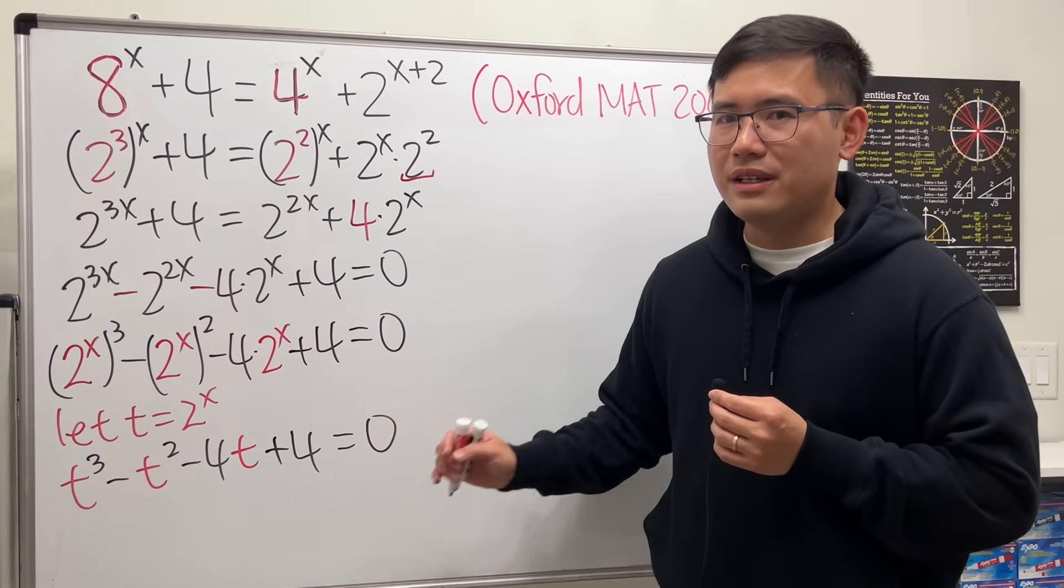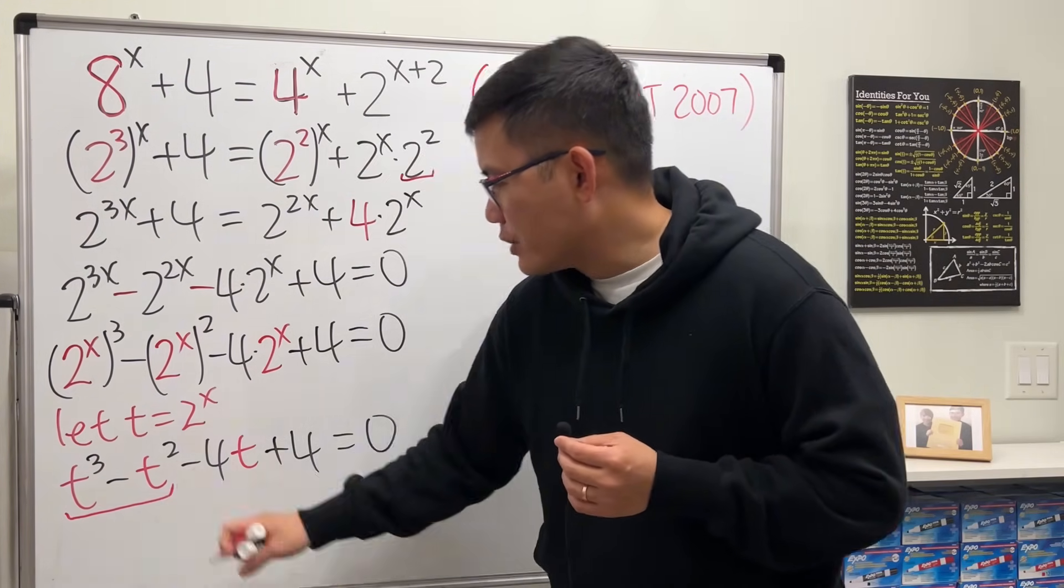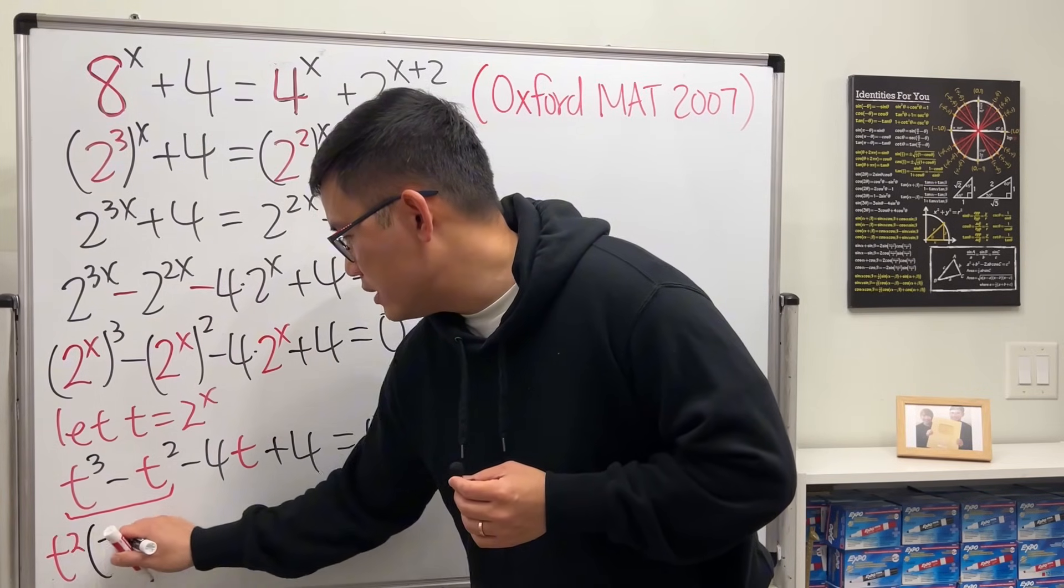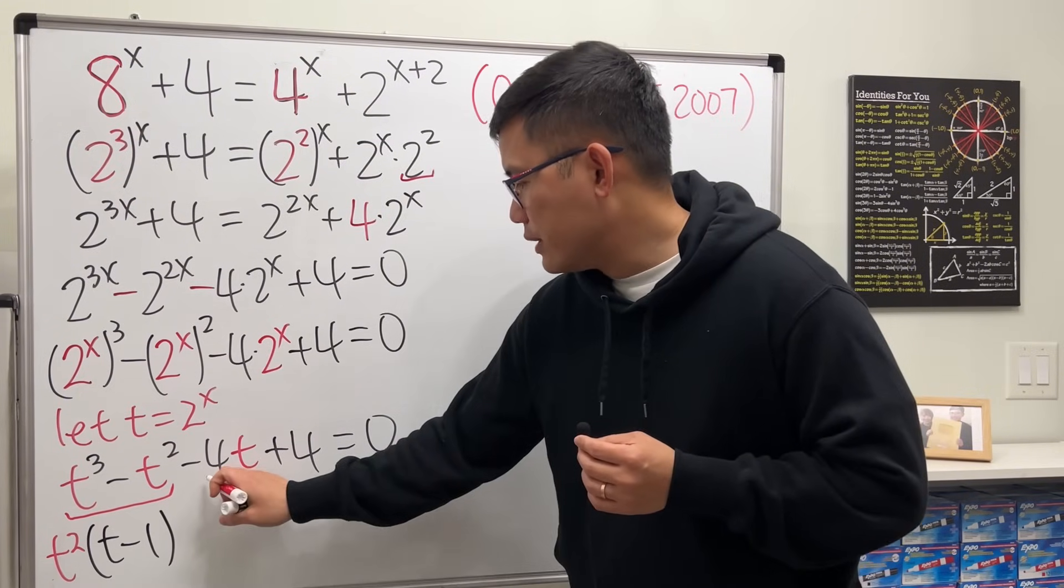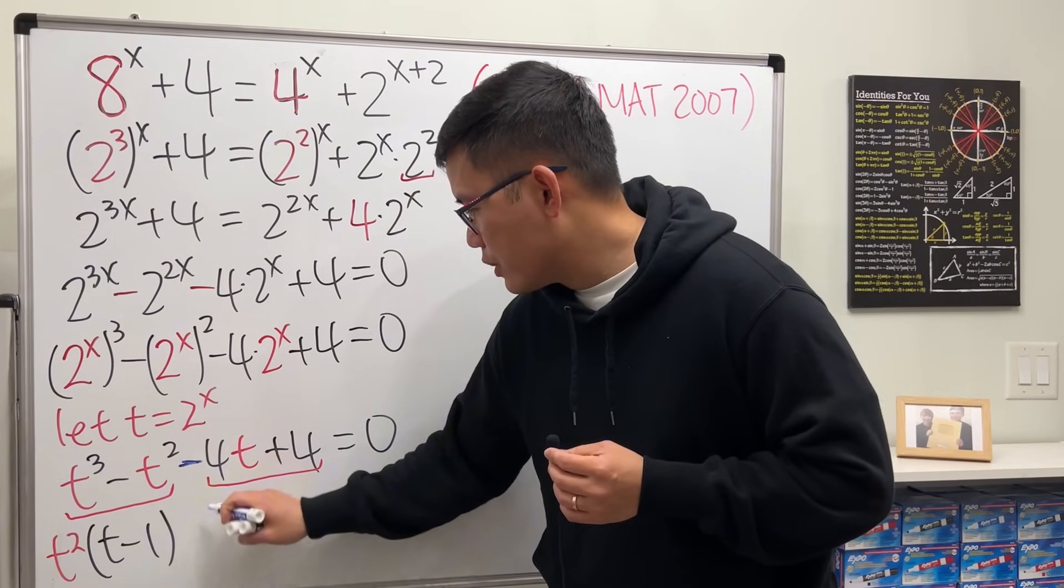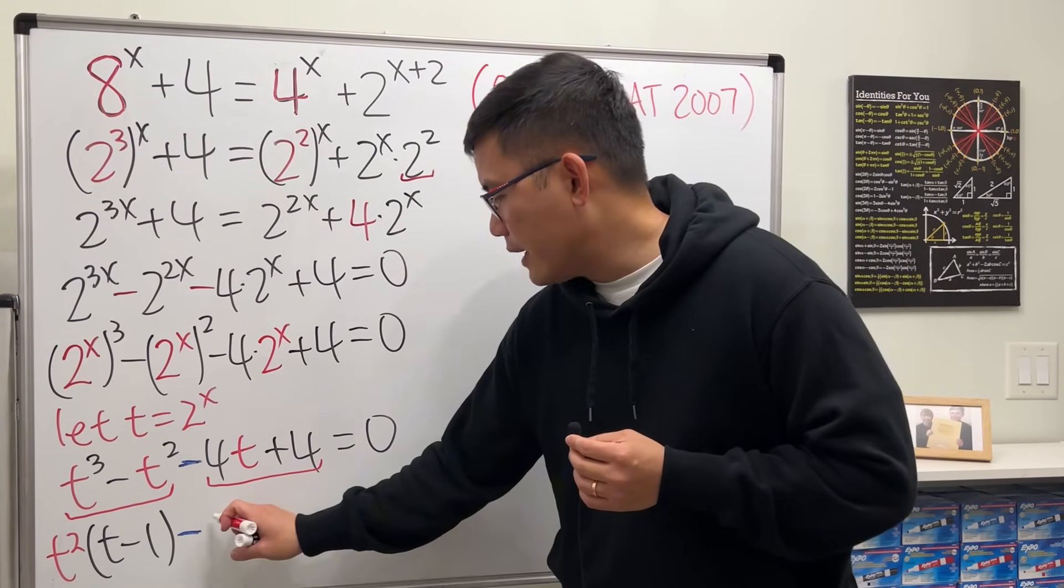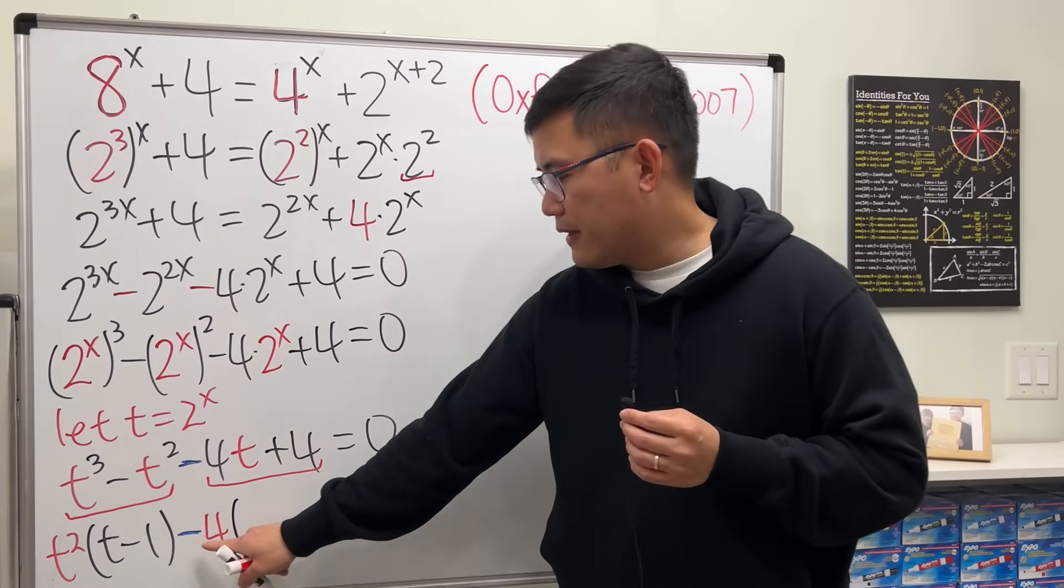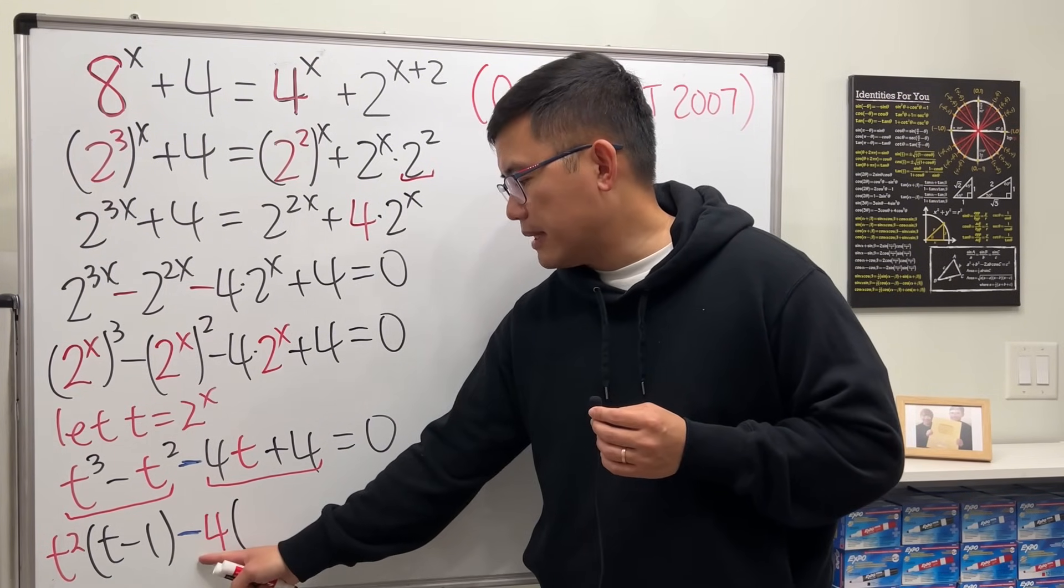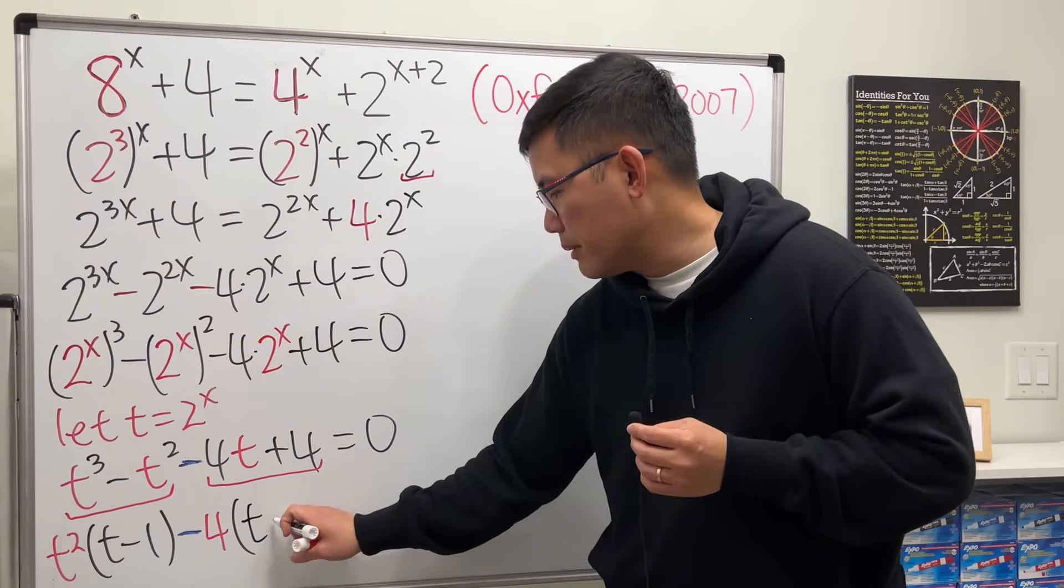We have a cubic equation now. And this right here is factorable by grouping. So let's look at the first two terms. We can factor out t squared, and then we get t minus 1. And then for these two terms, notice we have a minus in between here. Go ahead and write that down right away. 4 and 4, we factor out 4. But we are really factoring out negative 4. So originally, this term divided by negative 4, we get positive t. 4 divided by negative 4, we get minus 1.